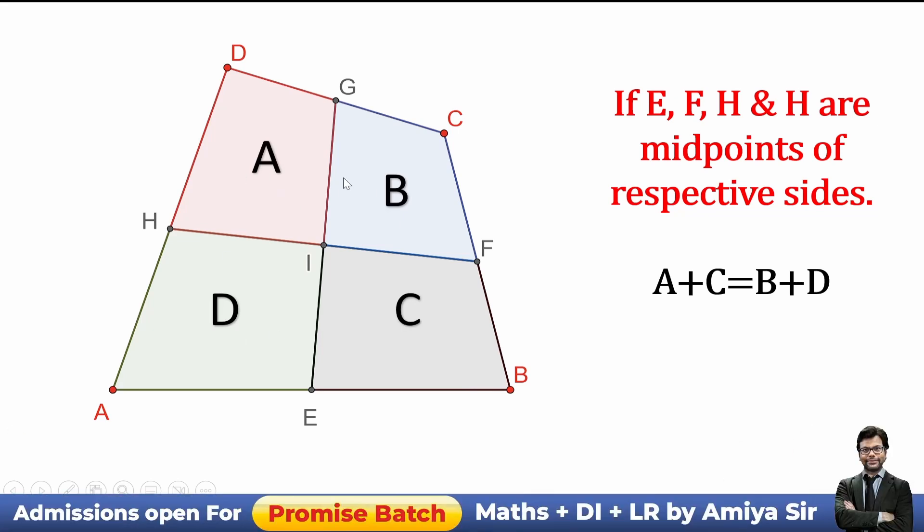If A, B, C, D are the areas of these four quadrilaterals by joining the midpoint, then A plus C equals B plus D. Opposite summation is always the same.